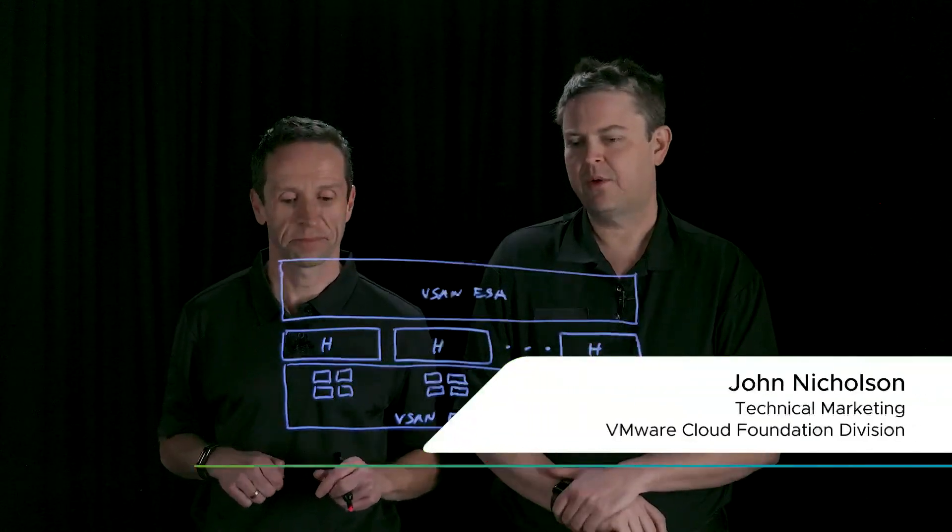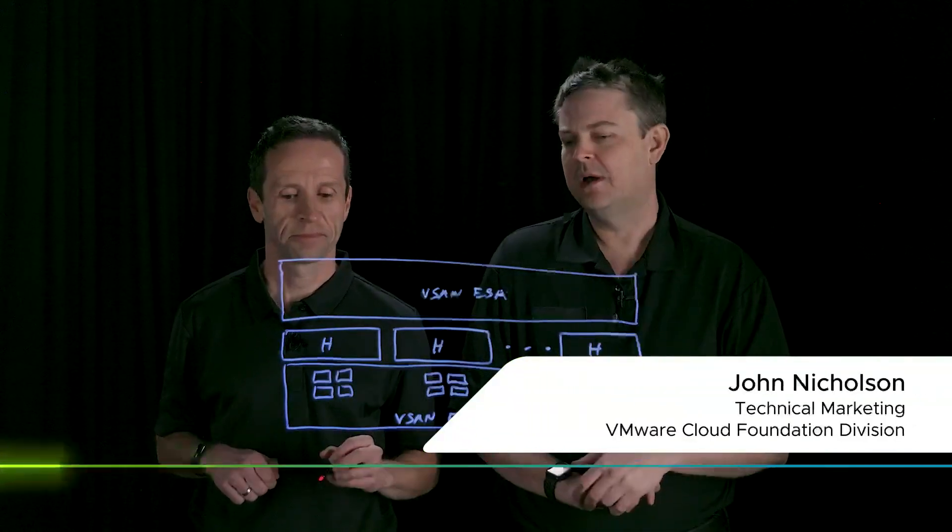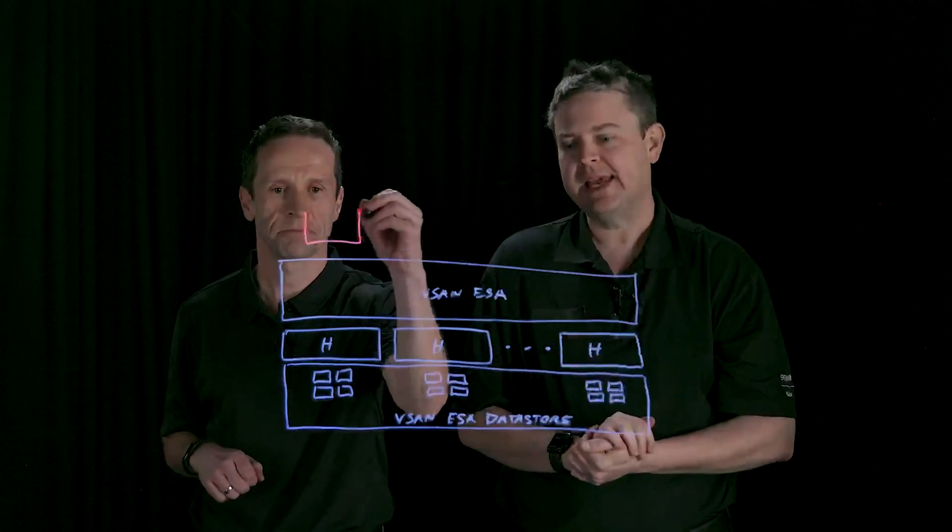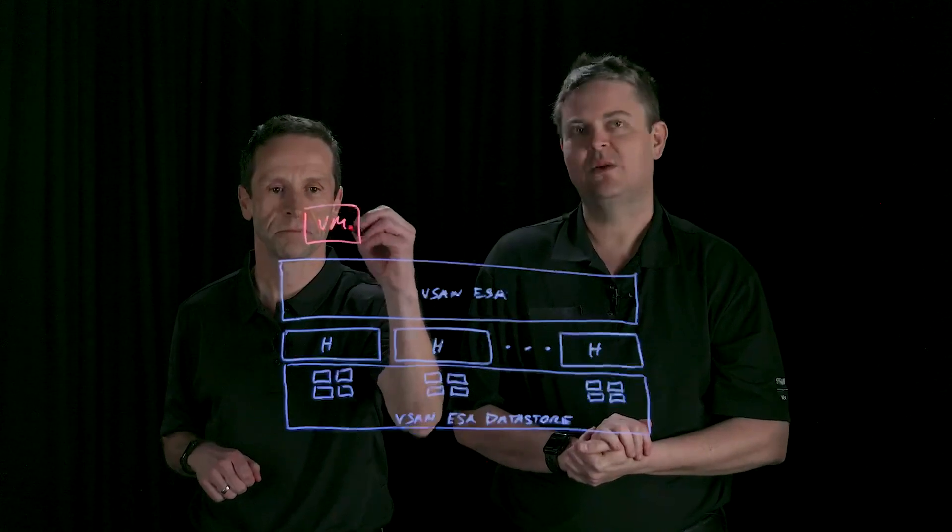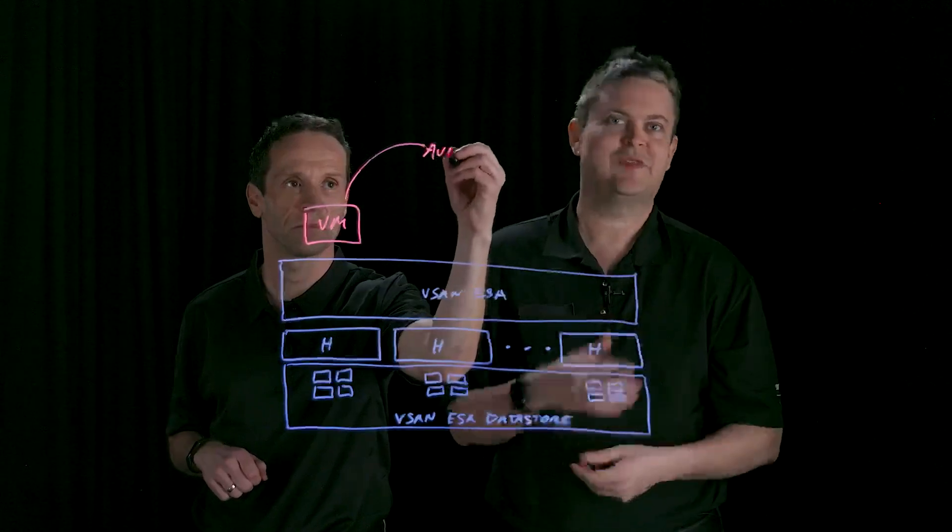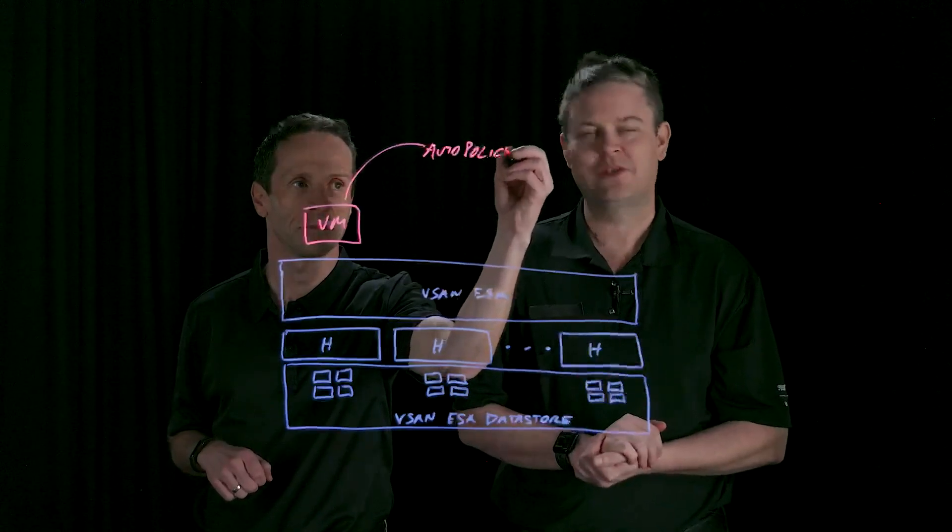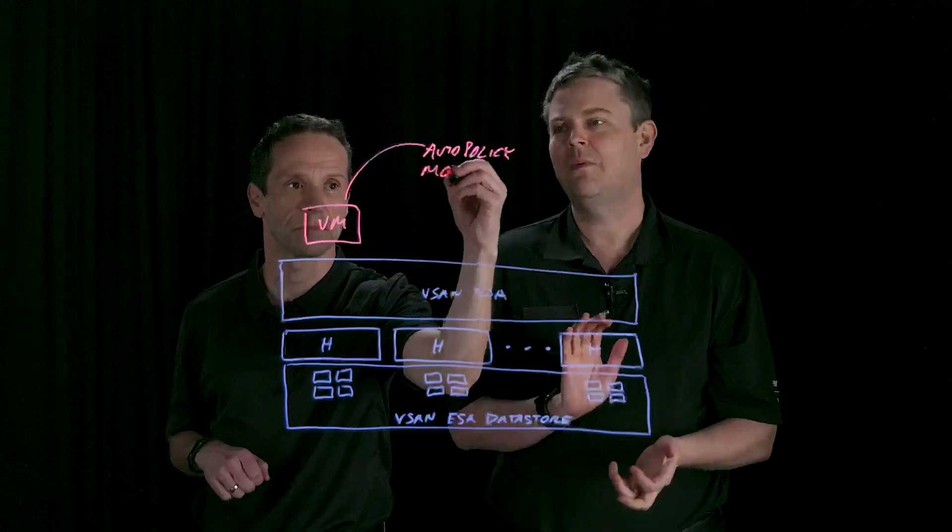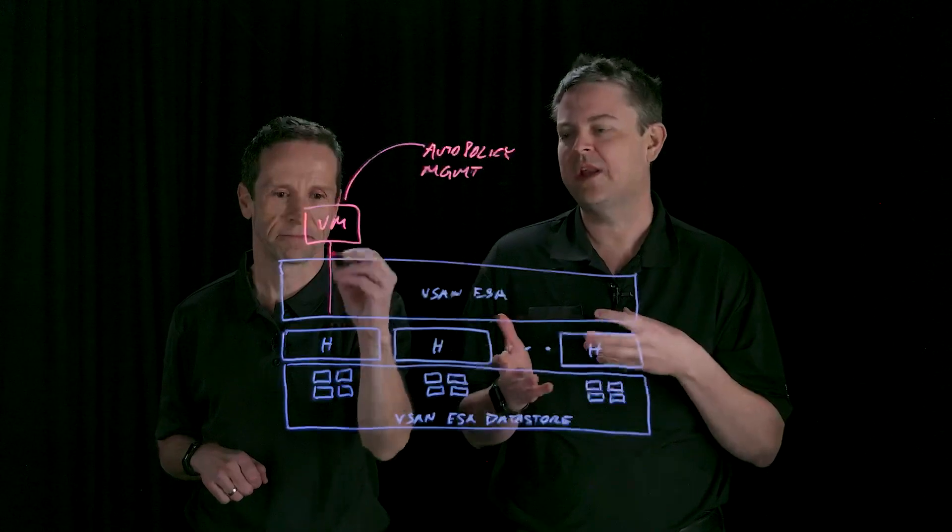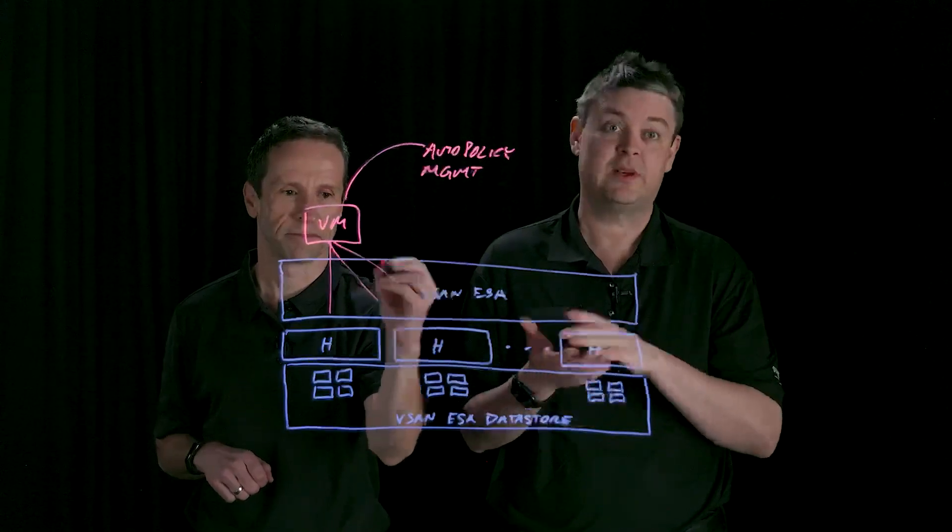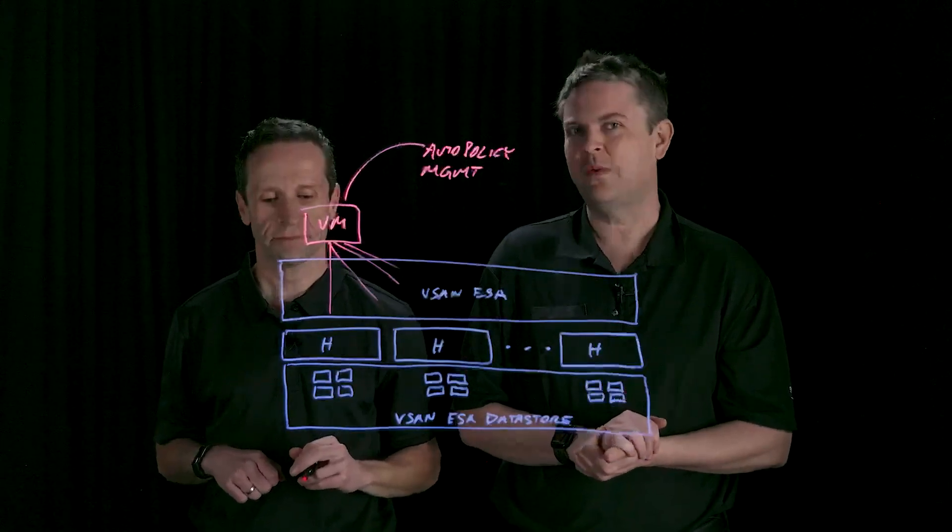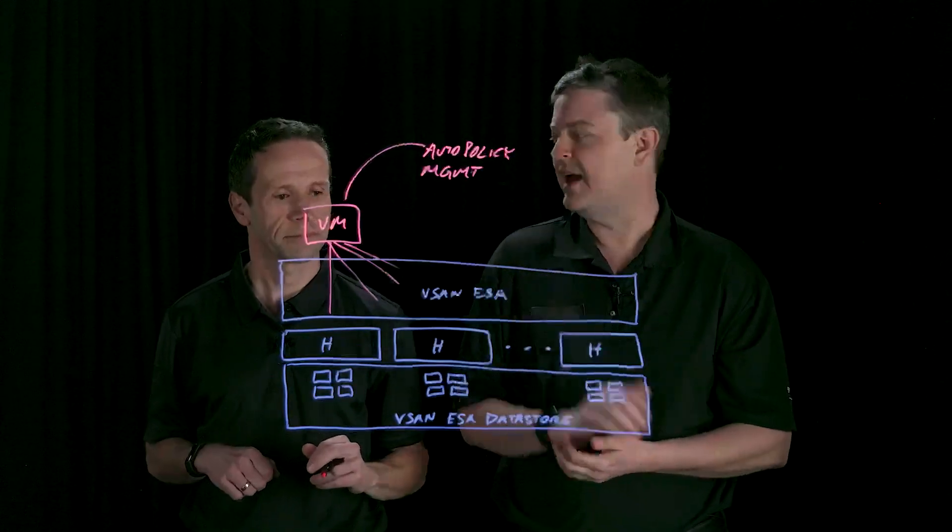So there's quite a few, but I really want to focus on just four right now. Some of which are about the management capabilities and operationally making it easier. And one of these is this new automatic policy management. Historically, we've done a lot of education about the different RAID levels and policies and stripe widths with the original storage architecture. And we understand that maybe you want to think a little bit less about this. So looking at the number of hosts in the cluster, the cluster configuration, stretched versus not stretched, we're going to make some assumptions about what you probably want for that policy and we're going to recommend that.